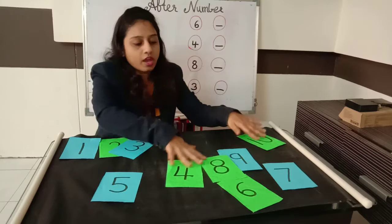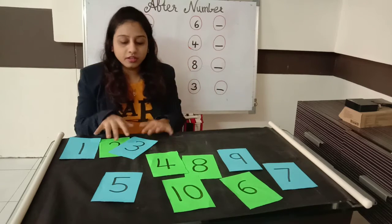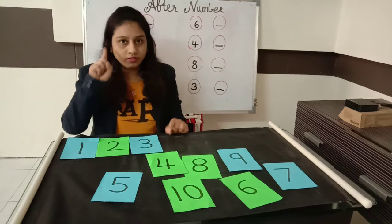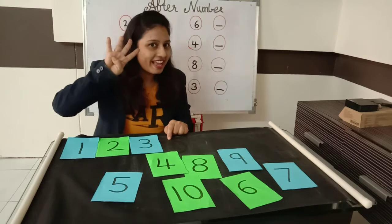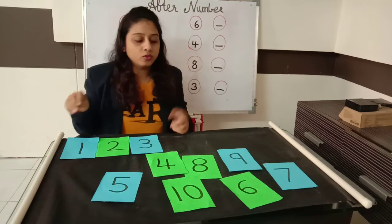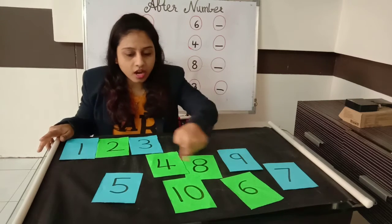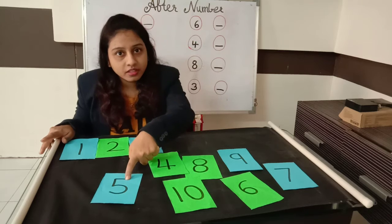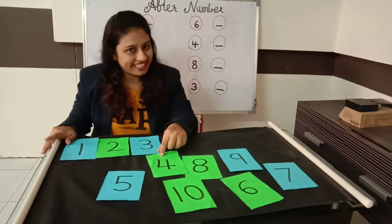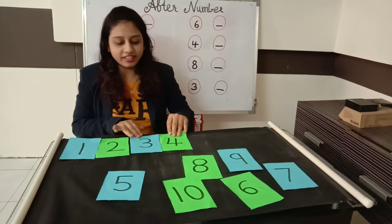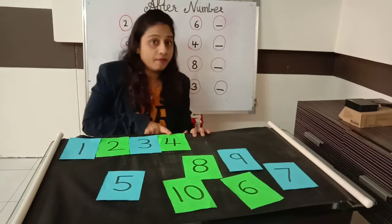What number comes after 3? 1, 2, 3, and 4. So where is number 4? I can't find it. Is this number 4? No. Is this number 4? Yes. So we will place it here — 1, 2, 3, 4.